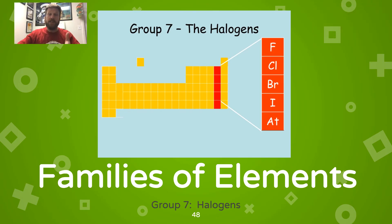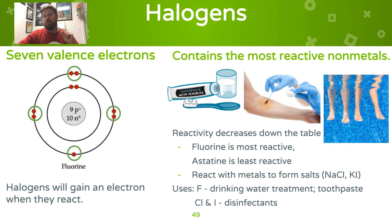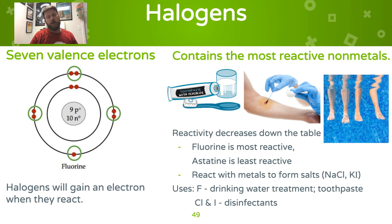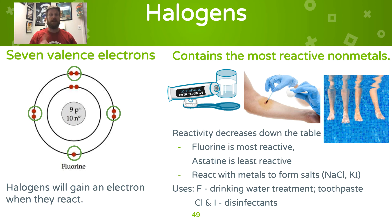Moving on to group 17 — these elements are called the halogens. They are the most reactive non-metals and, following the trend, have seven valence electrons. They will gain one electron when they react. The most reactive halogen is fluorine at the top; they become less reactive as you go down the family. These elements are very reactive with metals — table salt, sodium chloride, is a metal and a halogen. Potassium iodide, a component of some table salts, is also a metal and a halogen. Other uses include treating drinking water, chlorine in swimming pools, and iodine as a disinfectant before injections.